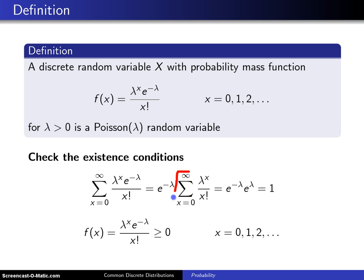If you take this summation and write out the first few terms, when x equals 0, this is lambda to the 0, which is 1, divided by 0 factorial, which is also 1. So you get a 1.